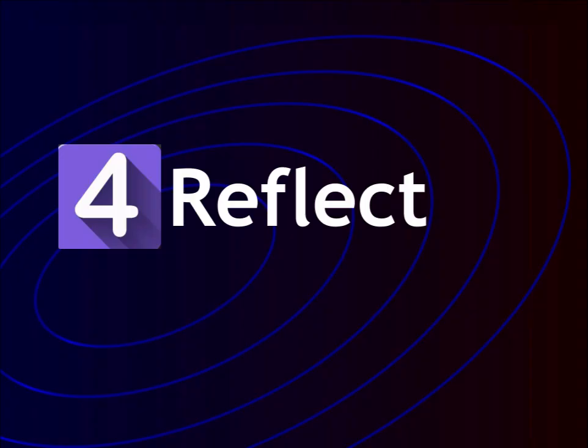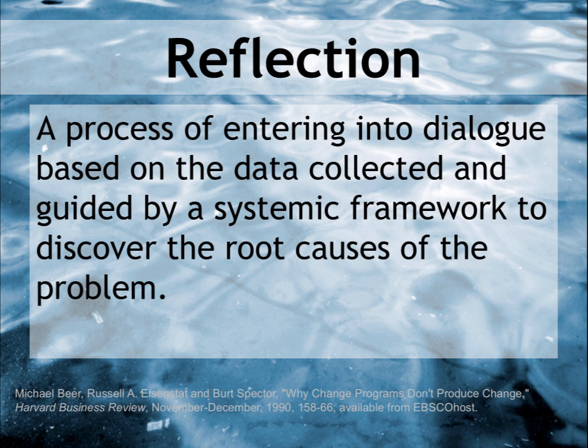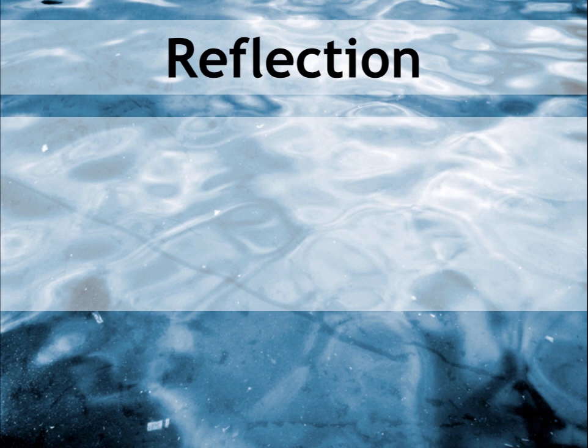The fourth step is to reflect on the action taken. One author states that action research is a cycle of action and reflection, and that this interplay between these two activities is at the heart of action research. Michael Baer and Russell Eisenstadt define reflection as a process of entering into dialogue based on the data collected and guided by a systemic framework to discover the root causes of the problem. In a sense, reflection is simply taking time to think, which is what critical thinking is all about. Remember, reflection comes after you have taken some kind of action — you are reflecting on the results of that action.